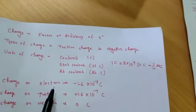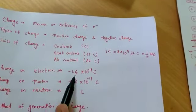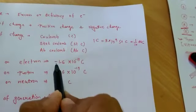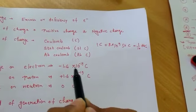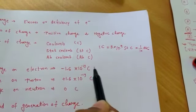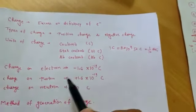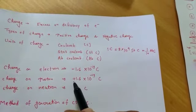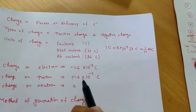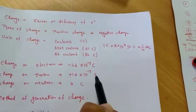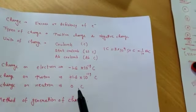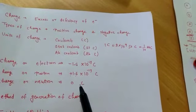We know that one electron has charge equal to 1.6 into 10 to the power minus 19 coulomb. Charge on proton is plus 1.6 into 10 to the power minus 19 coulomb. Neutron has no charge — it is neutral.